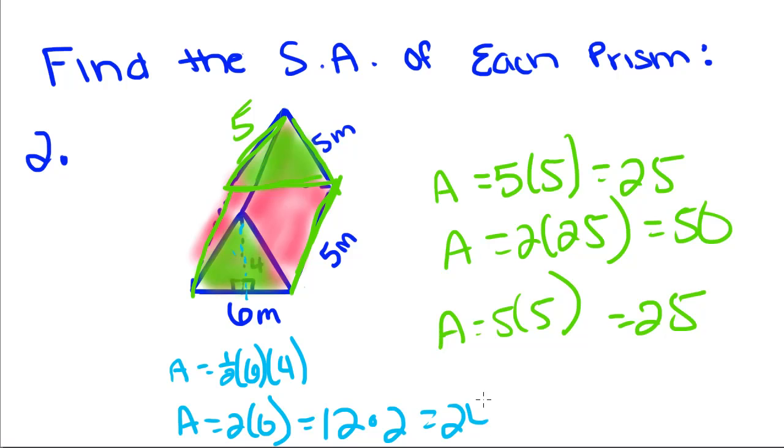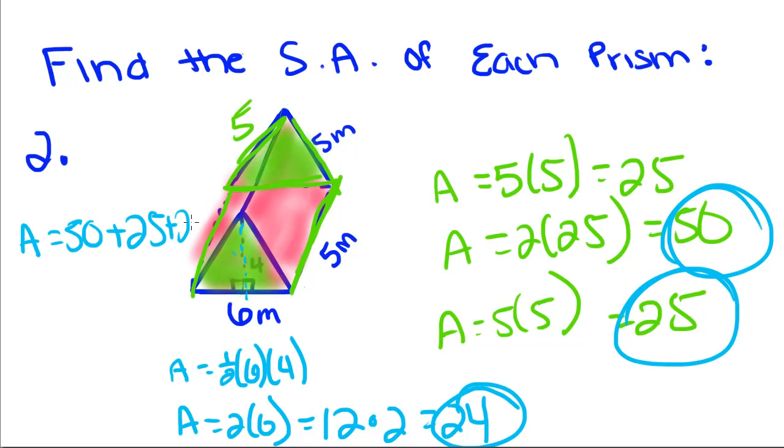Now to get the total surface area, we're going to take this plus this plus this. And we get area is equal to 50 plus 25 plus 24. So area is equal to 50 plus 25 is 75, plus 24 gives us 99.